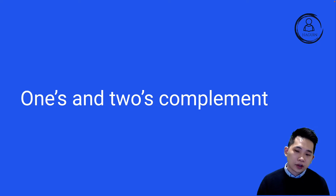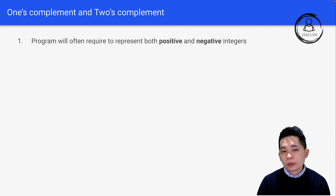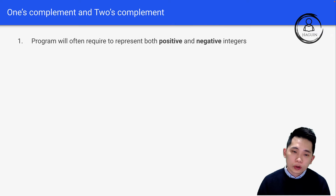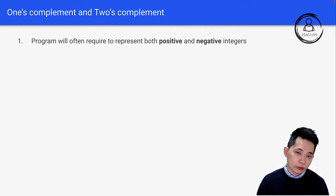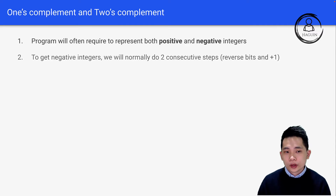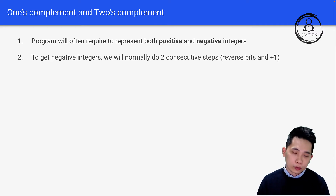Let's look into one's and two's complement. Programs will often require representing both positive and negative integers. So far we have only covered positive integers. To get negative integers, we'll normally do two consecutive steps.